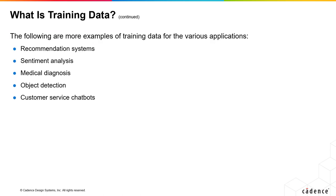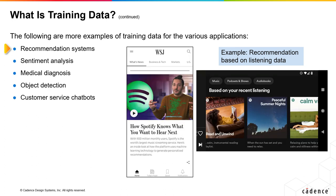Some more examples of training data are the following. Recommendation systems use data sets containing user behavior, such as product purchases, clicks, and ratings, to train the AI model to recommend products, movies, or music to users based on their preferences. In this example, Spotify recommends songs and playlists based on the user's playlists and liked songs.